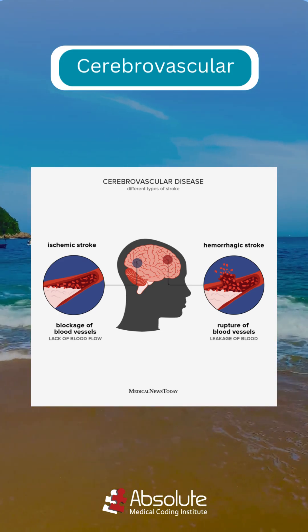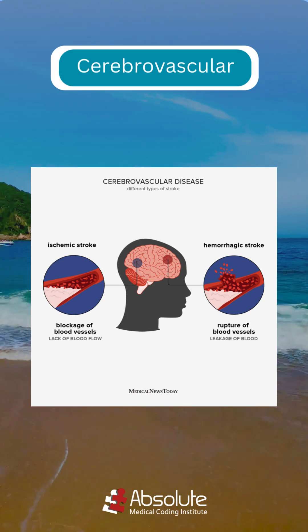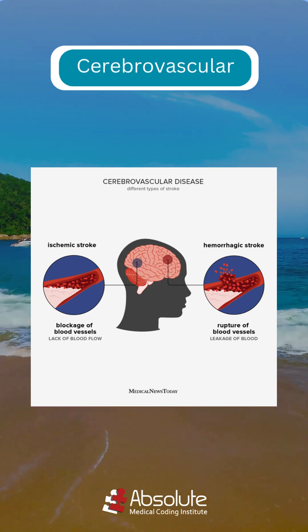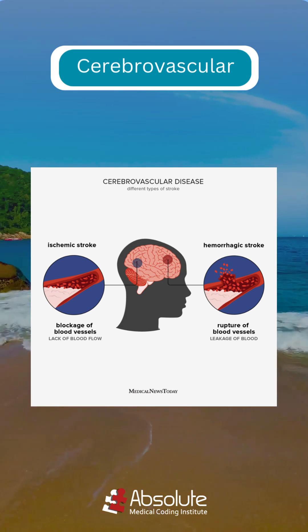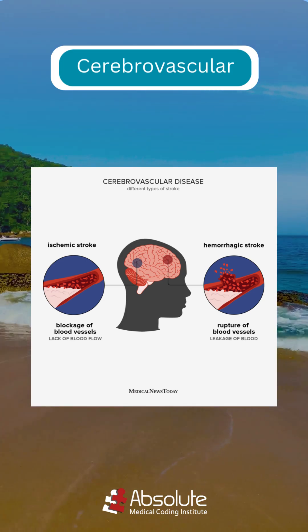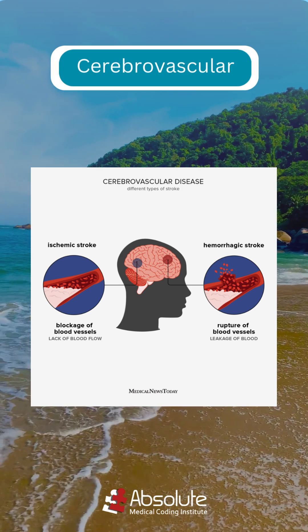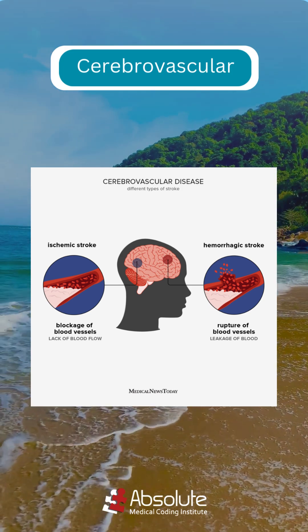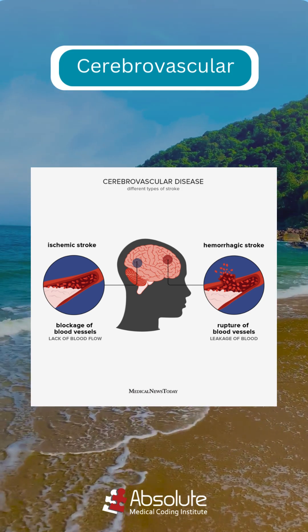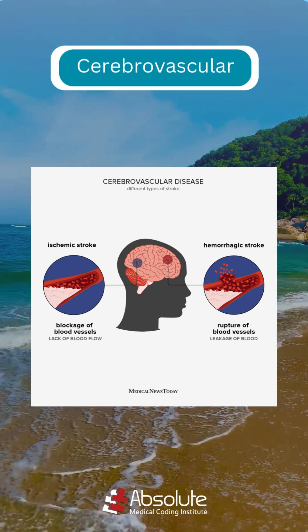And hemorrhagic stroke occurs when a weakened blood vessel in the brain bursts, leading to bleeding and pressure on brain tissue. We hope you learned something new today. Thanks for watching.